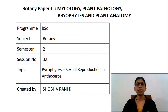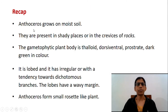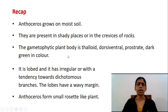Before understanding the sexual reproduction in Anthoceros, let us have a recap of the previous session. Anthoceros grows on moist soil. They are present in shady places or in the crevices of rocks. Anthoceros erectus, Anthoceros himalayensis and Anthoceros tempensis are commonly found in Western Himalayas.